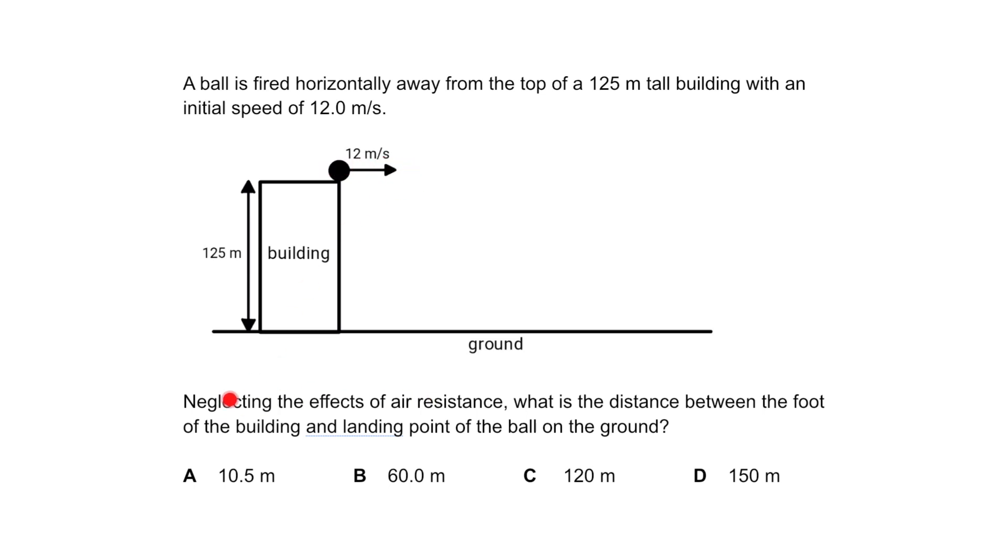The effect of air resistance is negligible, so free fall is applicable. Acceleration due to gravity is 10 meters per second squared. You're supposed to find the distance between the foot of the building and the landing point.